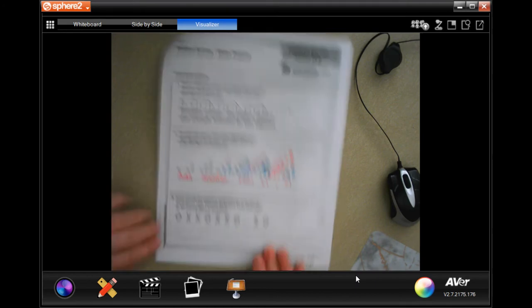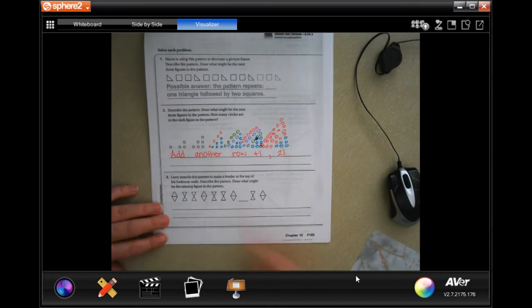Okay, Larry stencils this pattern to make a border at the top of his bedroom wall. Describe the pattern and draw what might be the missing figure in the pattern. So we have two triangles facing, so let's say a rhombus.